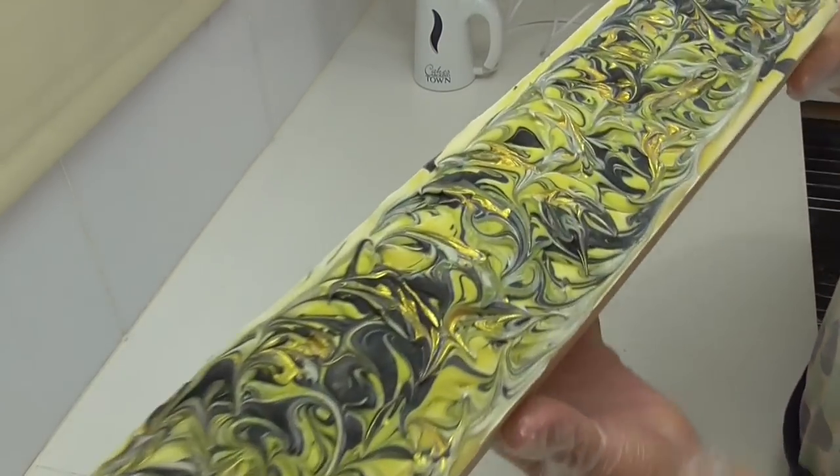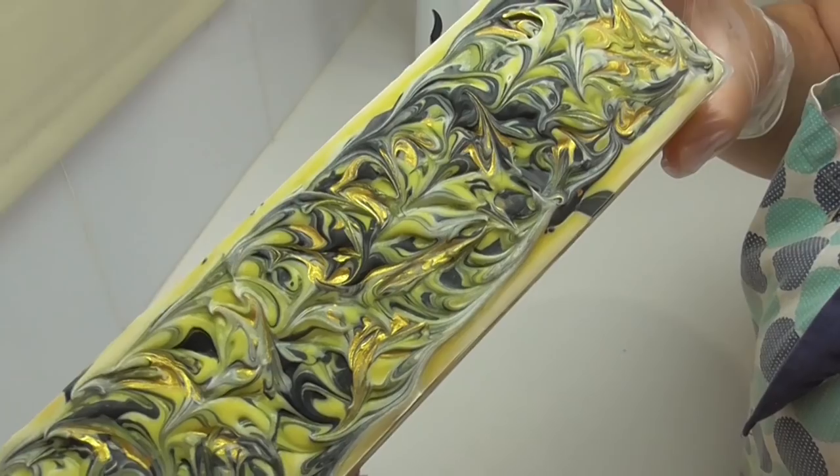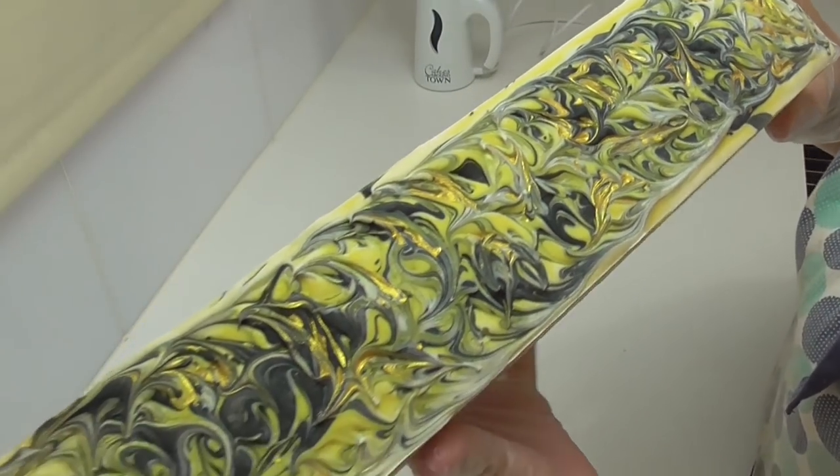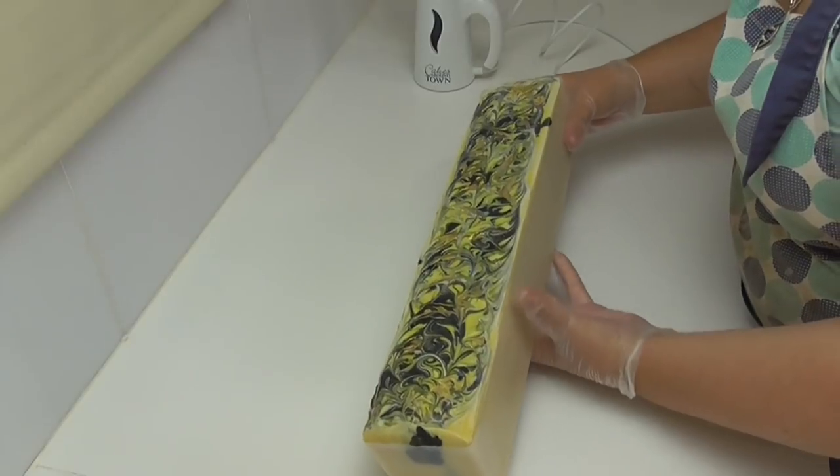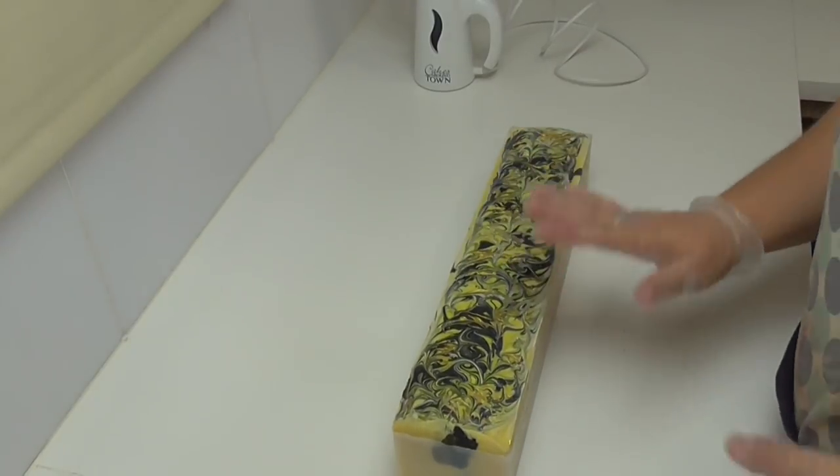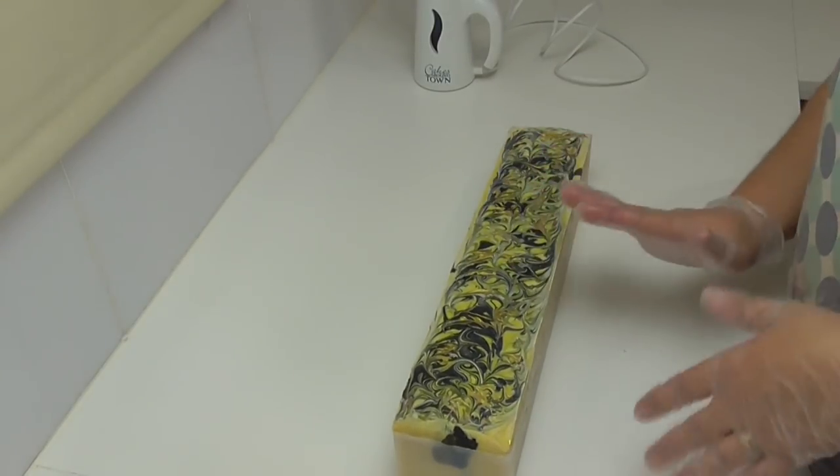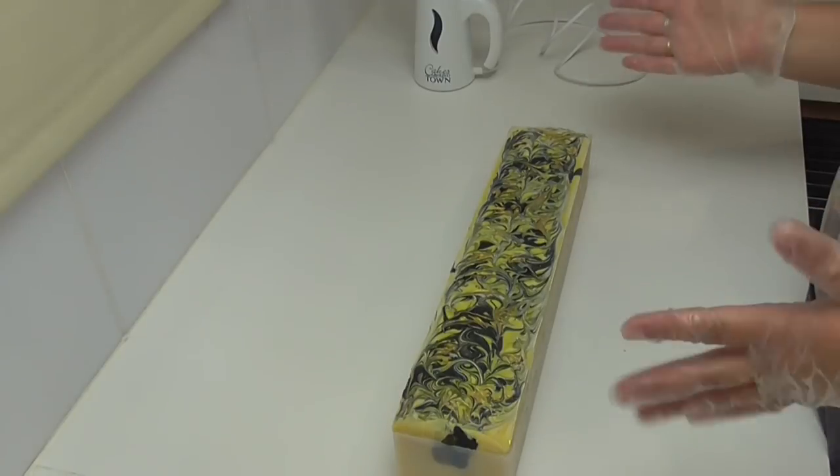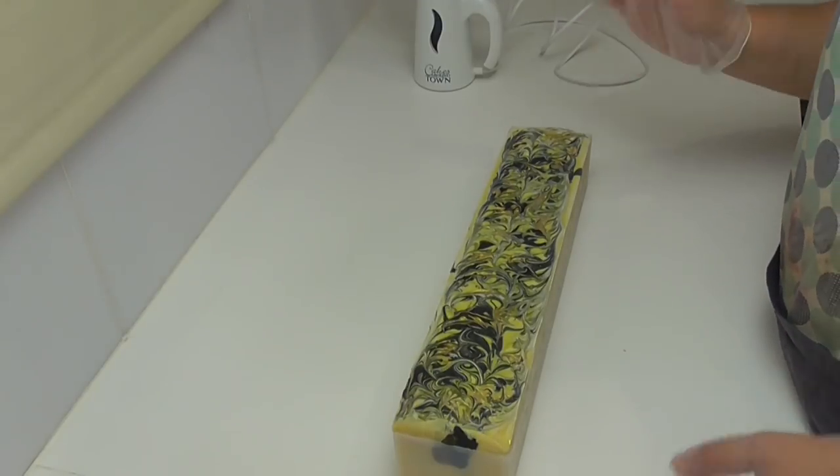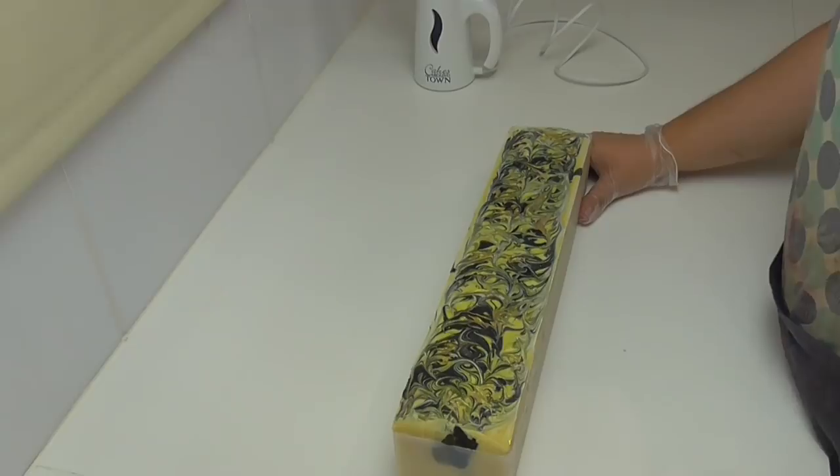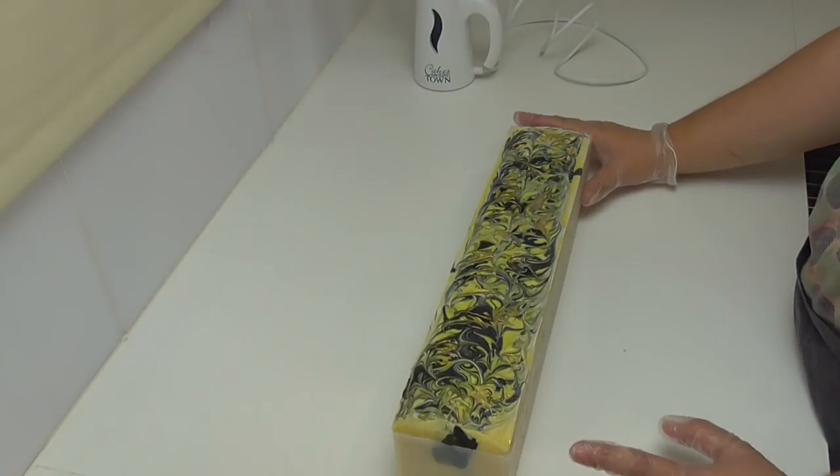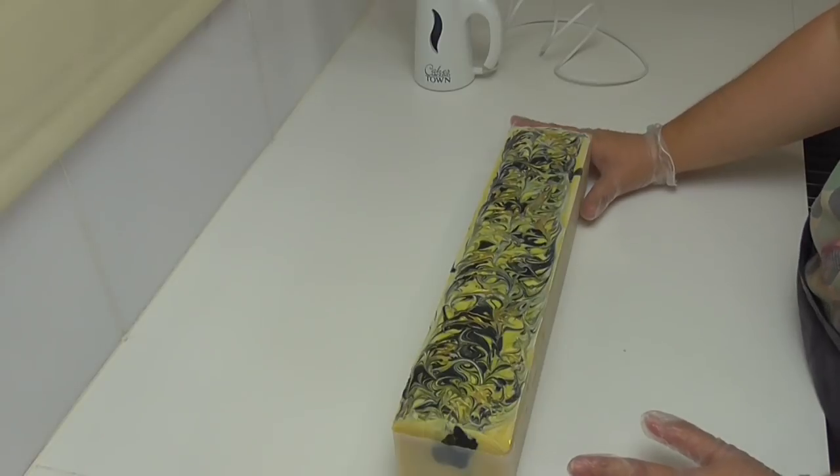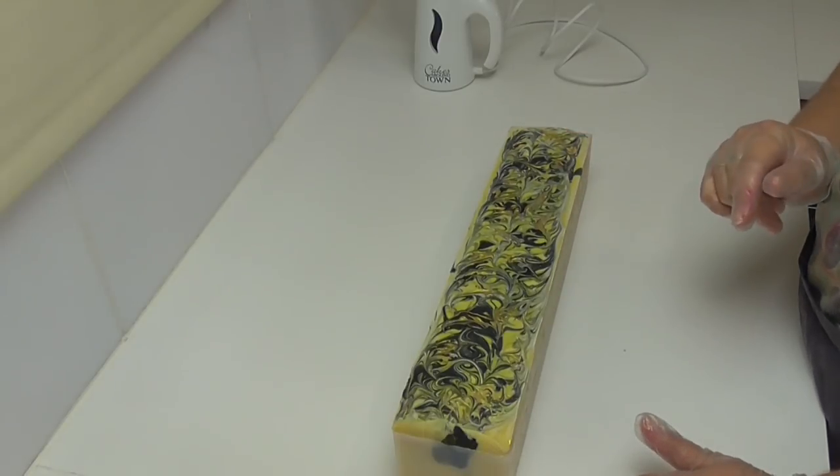Now the other thing you will also notice with this soap is that I do have soda ash on it and for some reason whenever I do these low top soaps I always get soda ash on them. If I pile the soap up a little bit or do the piping I never get the soda ash and it's exactly the same recipe so I don't understand why it's just these low tops. It doesn't matter how much rubbing alcohol I spray on it, how often I spray it, it doesn't matter if I insulate it or not, I still get soda ash on them.